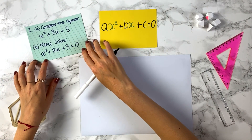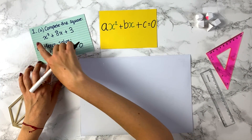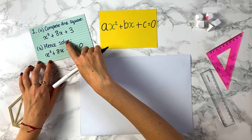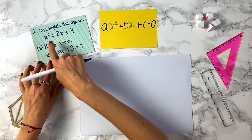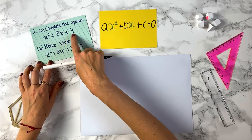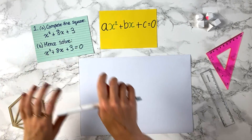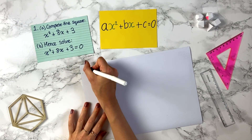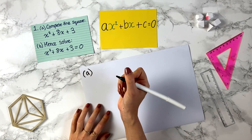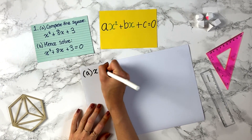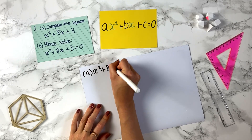Let's have a look at some exam questions. Here we've got question 1. The first part of the question asks us to complete the square for x squared plus 8x plus 3. So let's do this first. We've got part a, and so we've got x squared plus 8x plus 3.